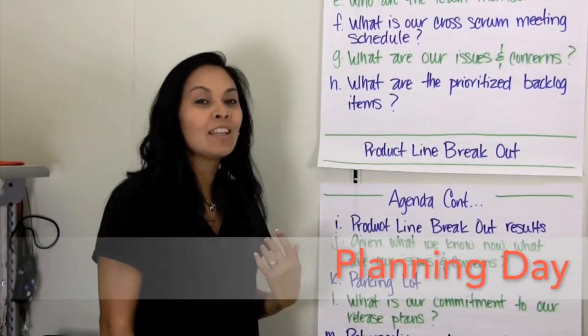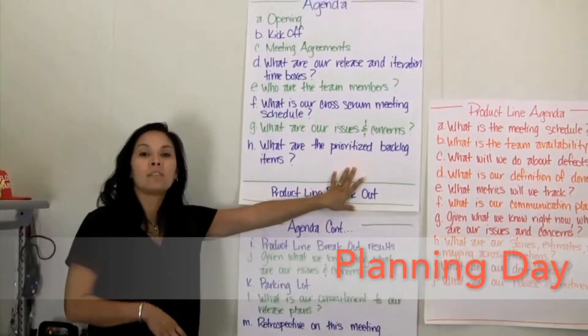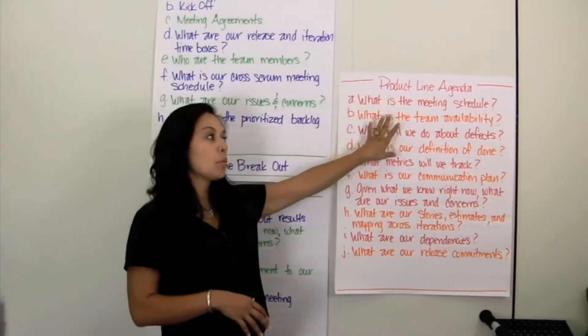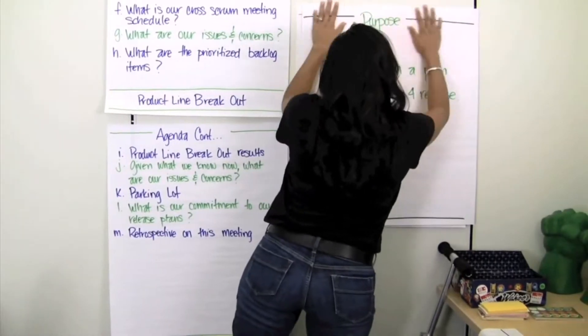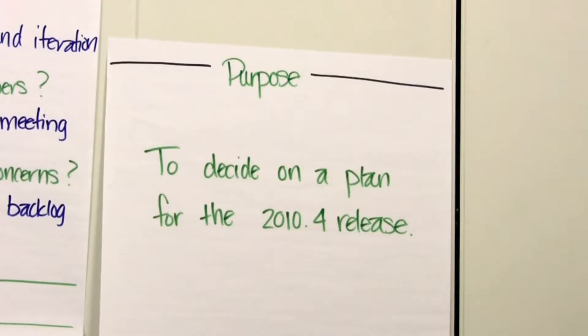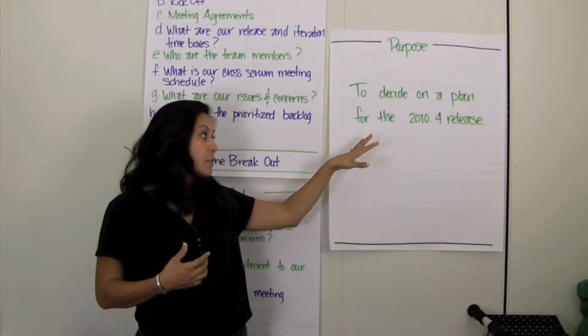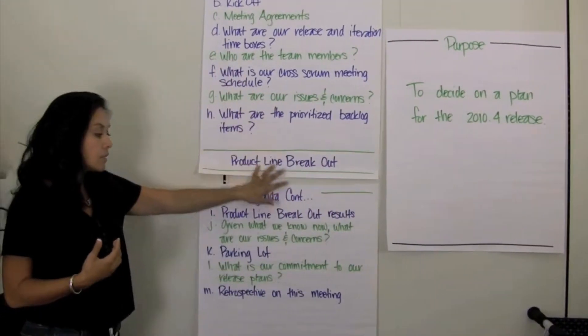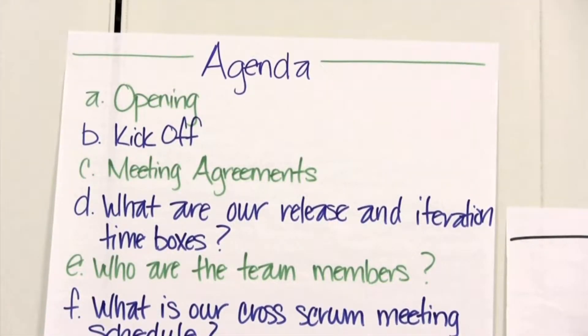Now let's talk about what we do on planning day. On release planning day, together as an entire engineering team, we start together and go through the first half of the agenda. We break out into product line groups and go through the product line agenda individually, then we reconvene and finish the rest of the agenda together. I generally open the meeting by talking about the purpose and reviewing the agenda, then have it open for everyone to make decisions on what the day should look like. This sets expectations and keeps us organized.